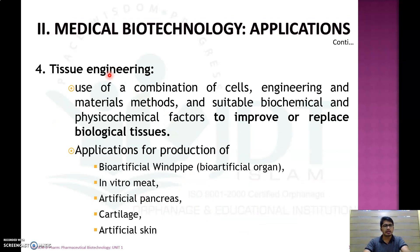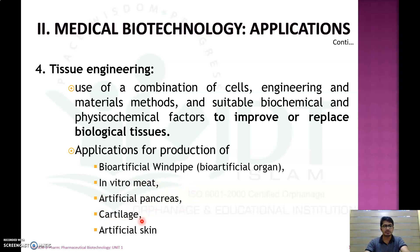The next application is tissue engineering, which uses a combination of cell and tissue engineering, material methods, and suitable biochemical and physicochemical factors to improve or replace biological tissue. The main applications of tissue engineering include production of bio-artificial windpipes, bio-artificial organs, in-vitro meat, artificial pancreas, artificial cartilage found between joints, and artificial skin — all produced by combining cells with engineering techniques and suitable biochemical factors.